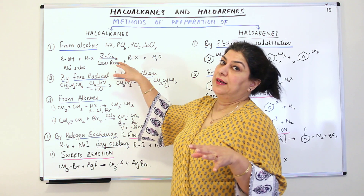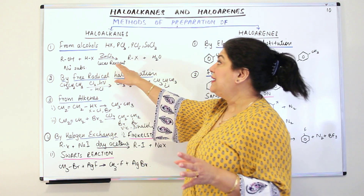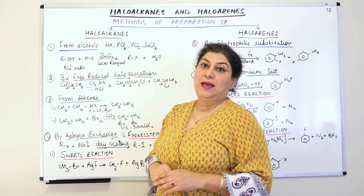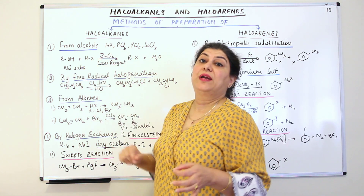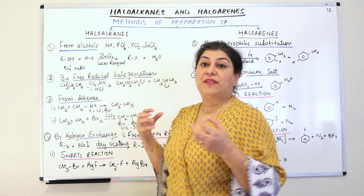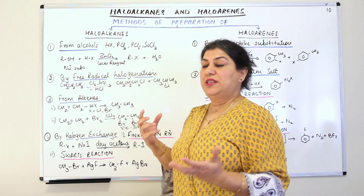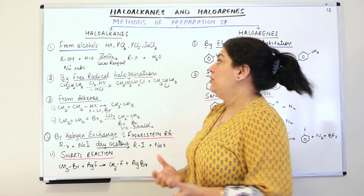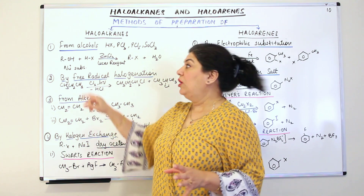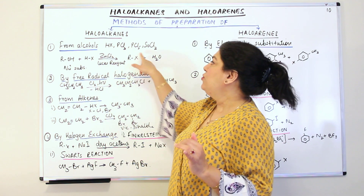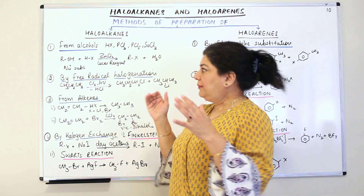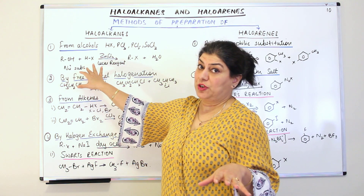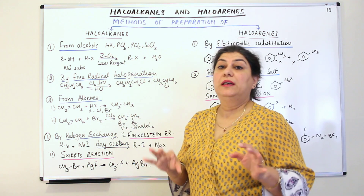This is usually used for the chlorine and bromine derivatives. When reacting with a halogen acid, you use zinc chloride. Zinc chloride in the presence of HCl is known as Lucas reagent — the mixture of ZnCl2 and HCl. So when an alcohol reacts with HX in the presence of zinc chloride, you get the haloalkane and water is given out. This is a nucleophilic substitution reaction.